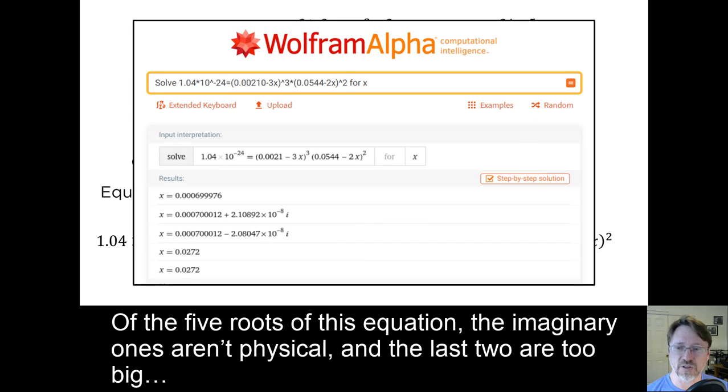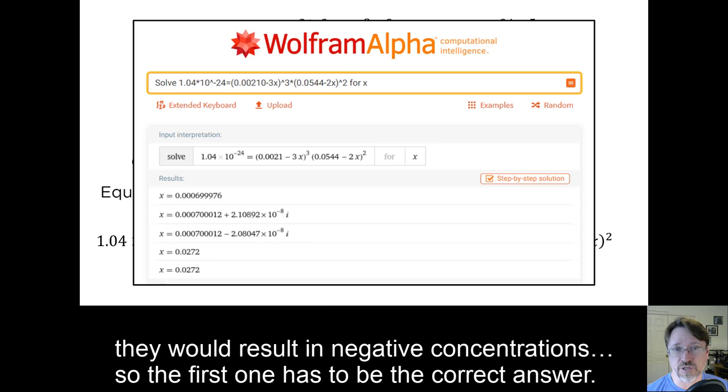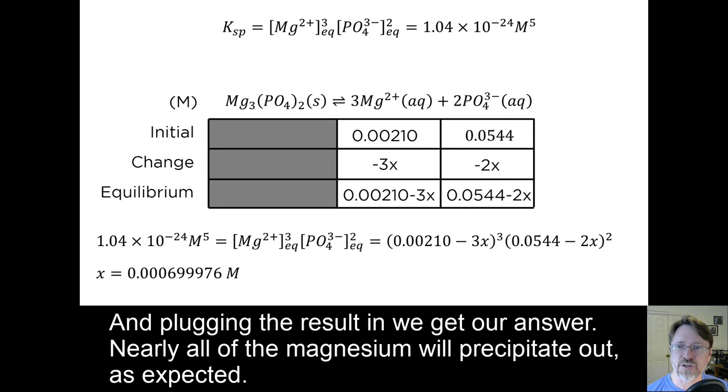Of the five roots of this equation, the imaginary ones aren't physical, and the last two are too big. They would result in negative concentrations. So the first one has to be the correct answer. And plugging the result in, we get our answer. Nearly all of the magnesium will precipitate out, as expected.